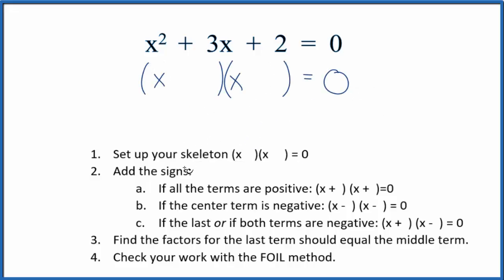Next we'll add the signs into our skeleton equation here. If both of these here are positive then we'll use this format here. So we'll put a plus here and a plus here. Now we'll look at the factors for the last term.